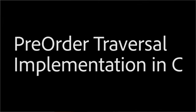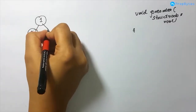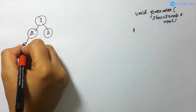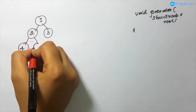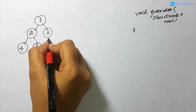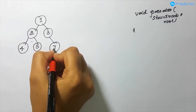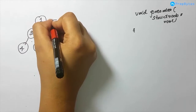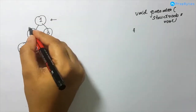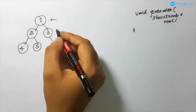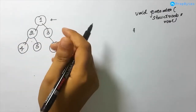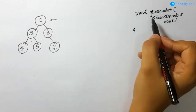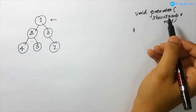Now let's go to pre-order. So let's say I have a tree. We know that in the case of pre-order, first we visit the root, then we traverse the left subtree, then we traverse the right subtree. So let's try to write the code for pre-order.